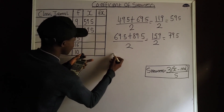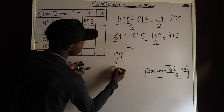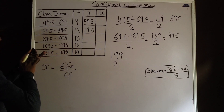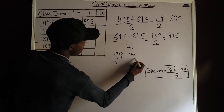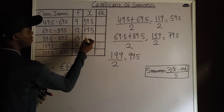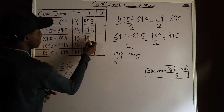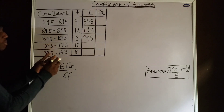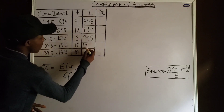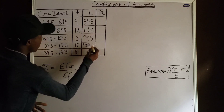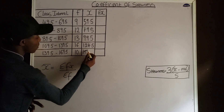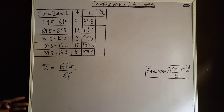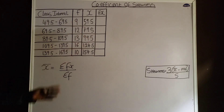199 divided by 2 gives a midpoint of 99.5. The midpoint of the class interval 109.5 to 124.5 is 99.5, and for the remaining class intervals the midpoints are 124.5 and 154.5. We have successfully obtained all the midpoints x for each class interval.